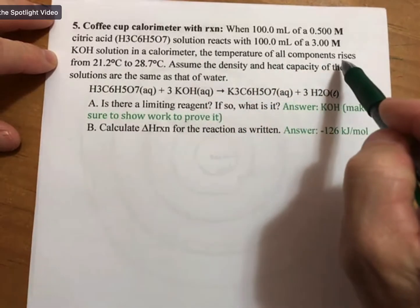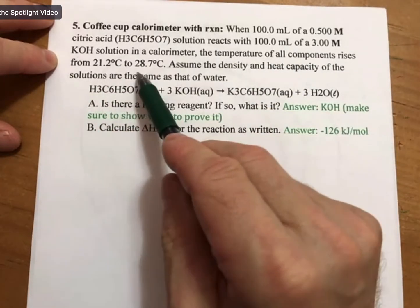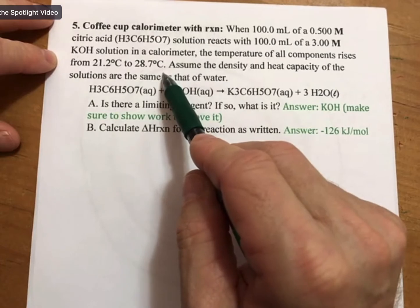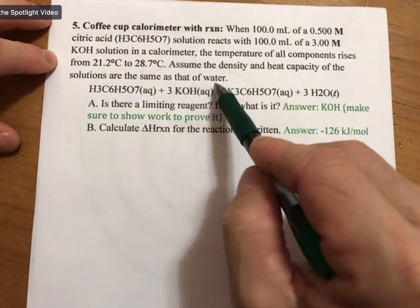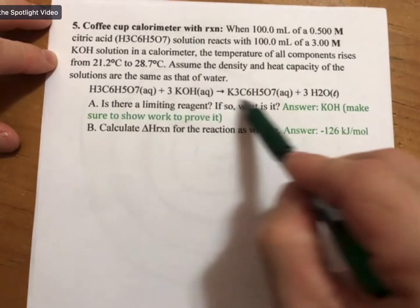The temperature of all components rises from 21.2 to 28.7 degrees Celsius. Assume the density and heat capacity of the solutions are the same as that of water. Here is our balanced reaction.